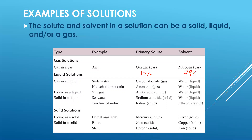Liquids can be solutions as well. One example of a gas dissolved in a liquid is soda — carbon dioxide is the solute because it's the lesser amount. You could also have liquid-in-liquid solutions; vinegar and alcohol are examples. 80 proof alcohol means 40% ethanol out of 100% total. Solid-in-liquid solutions include salt water. There are also solid solutions, such as alloys like brass or amalgam.